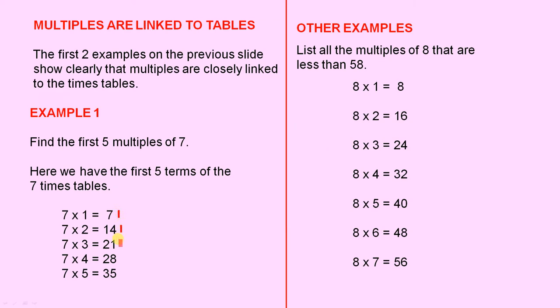7 times 2 is 14. 7 times 3 is 21. 7 times 4 is 28. And 7 times 5 is 35.